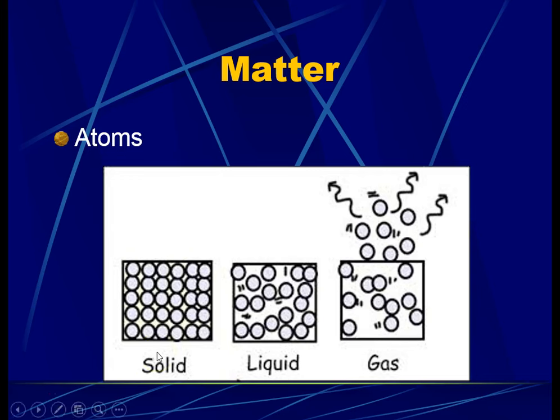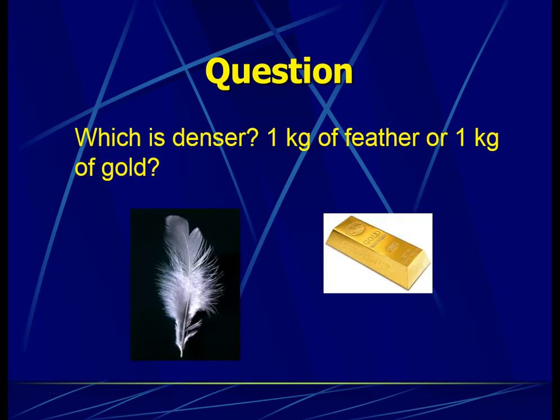For this chapter, we are trying to understand the significance and meaning behind how matters are like in solid, liquid, and gas, and how does that contribute to mass, weight, inertia, and density. Once you have understood these four key concepts, we will be able to answer questions.